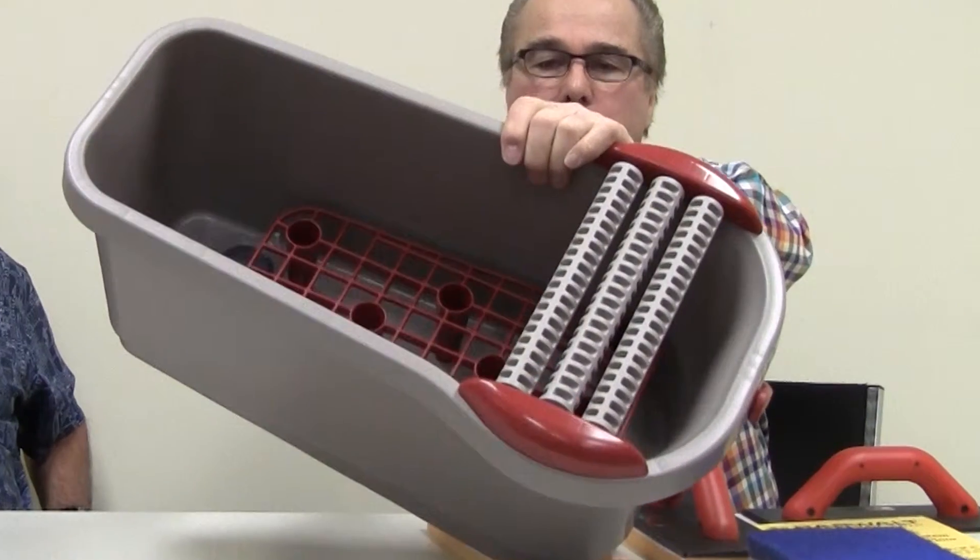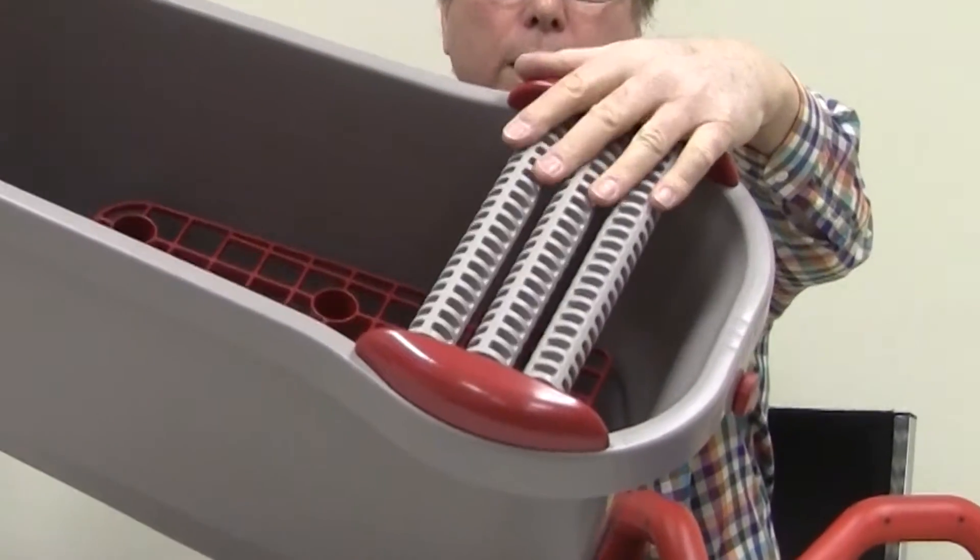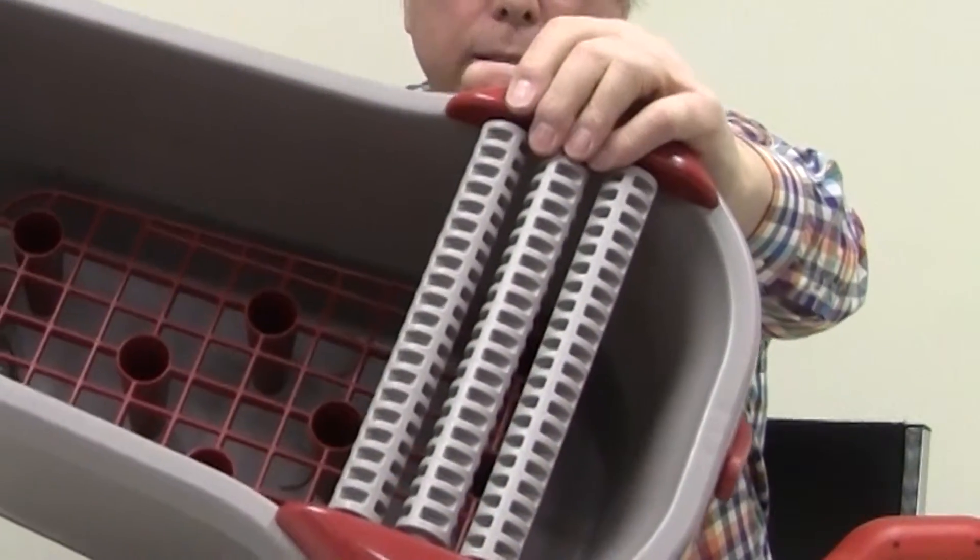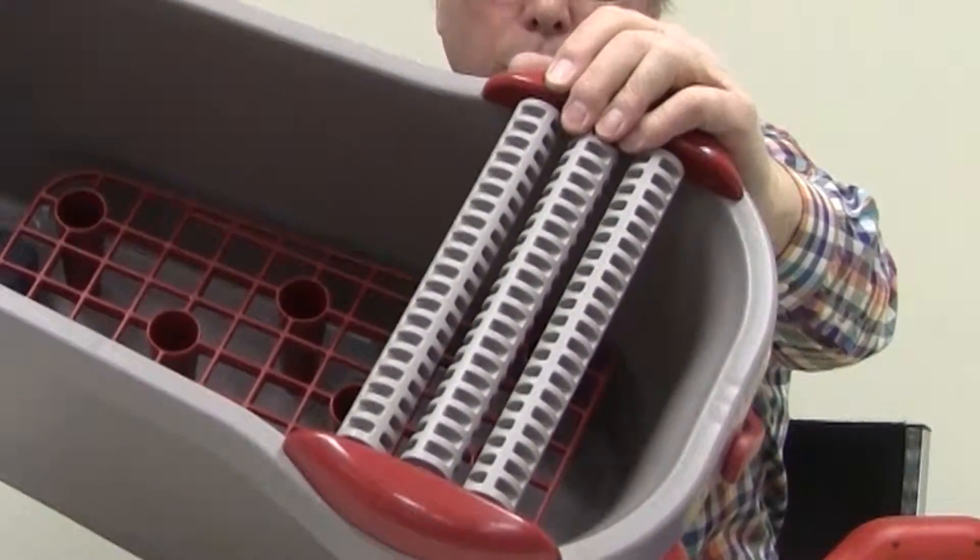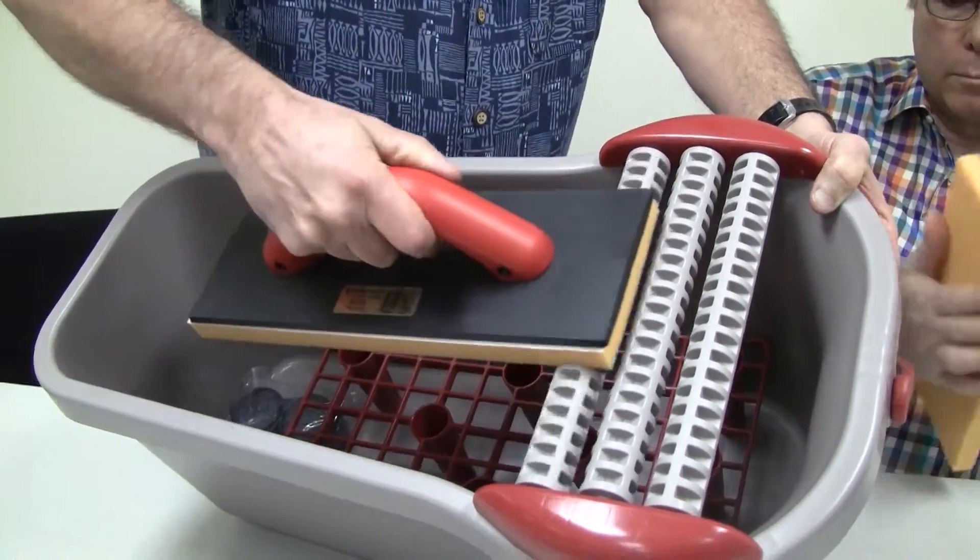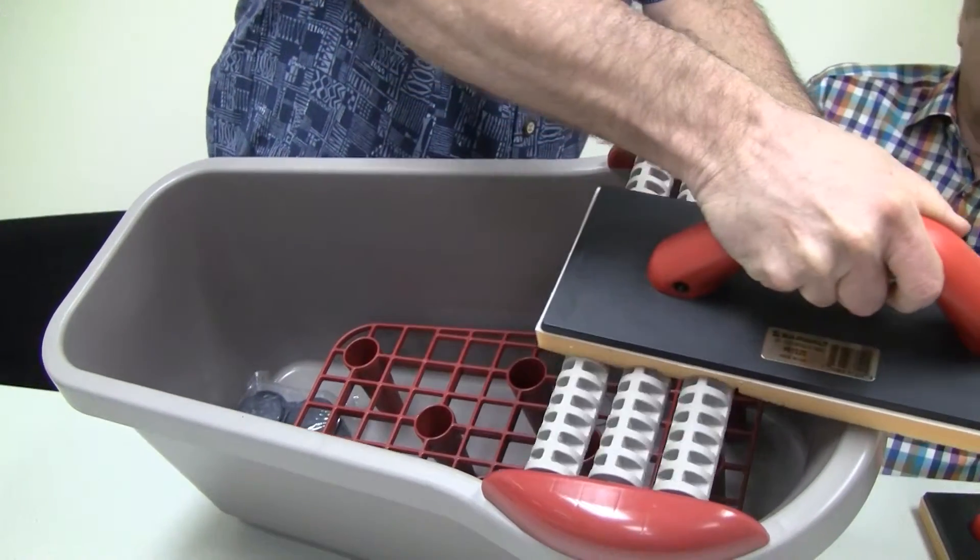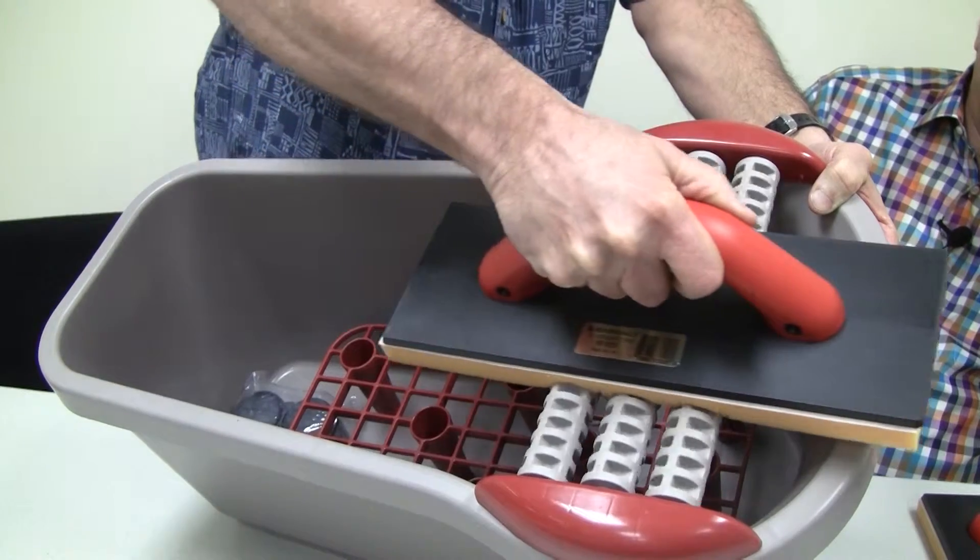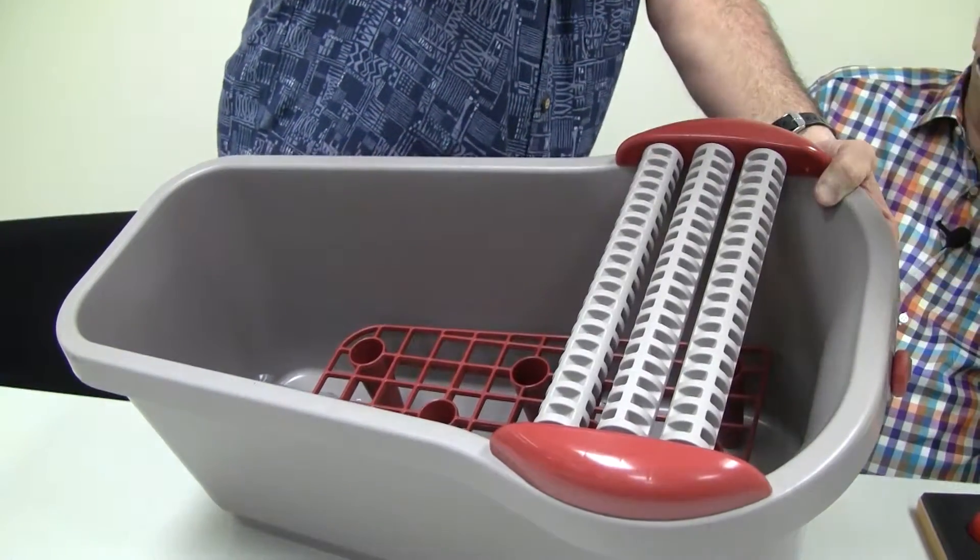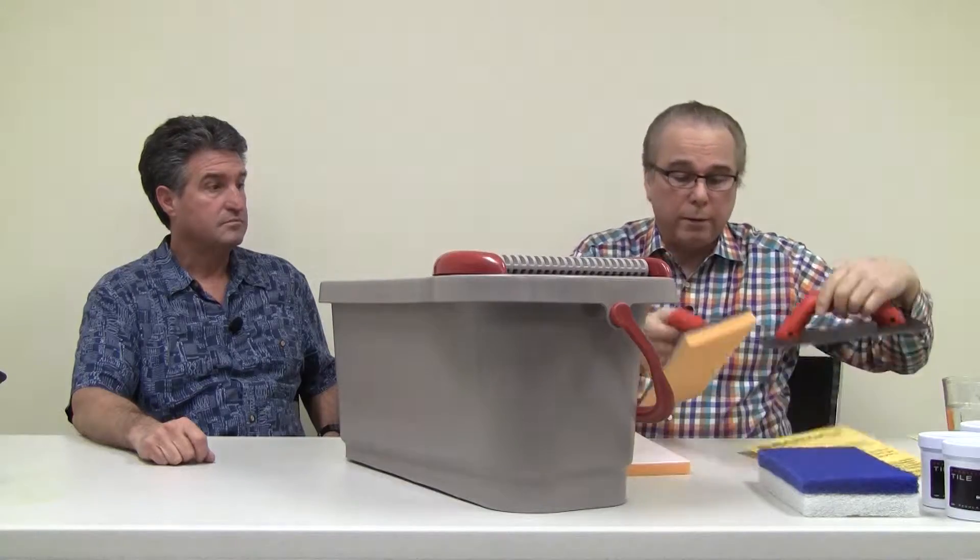Inside, you've got three hollow wheels that really get the moisture out of the sponge after you dip it and wet it. You have a grate where you can pump the sand and cement out of the sponge so you can get it clean and go back to washing. It comes with two handles.